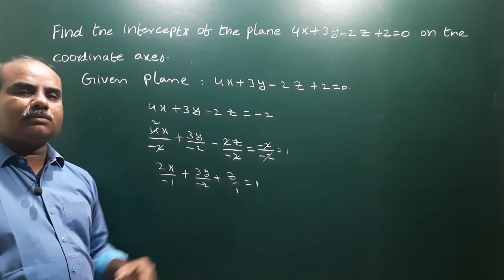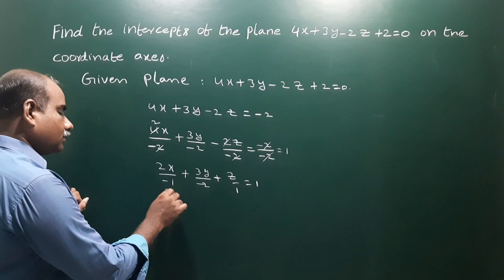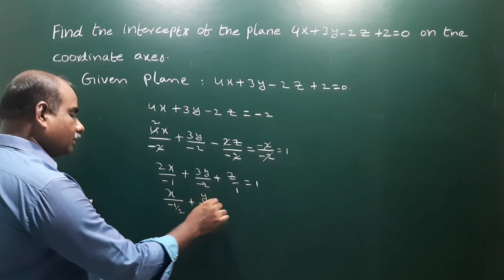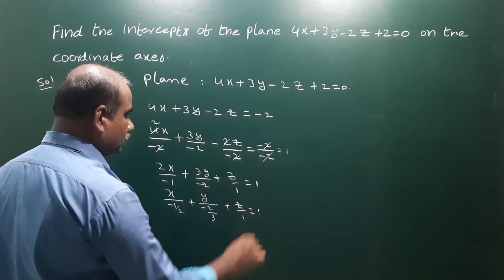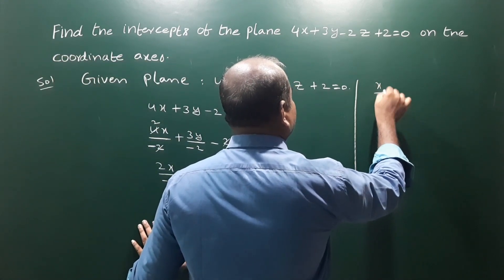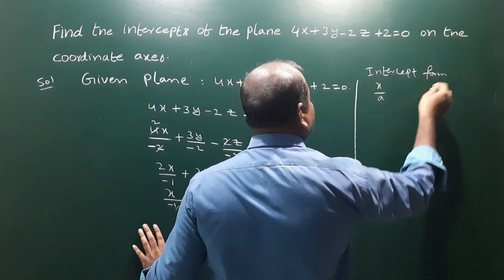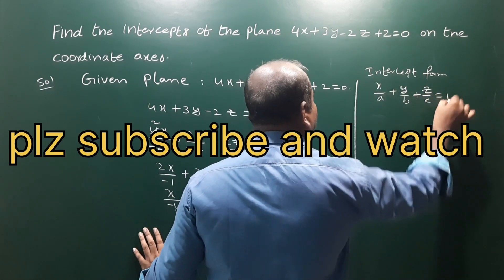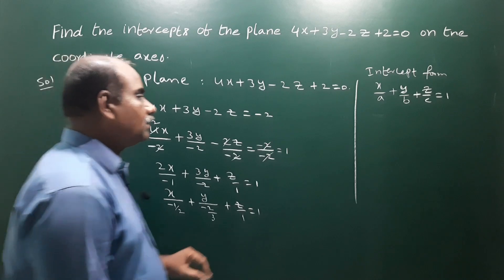This gives us x over minus 1/2, plus y over minus 2/3, plus z over 1, equals 1. This is now in the intercept form x over a plus y over b plus z over c equals 1, which is the standard intercept form of the plane.